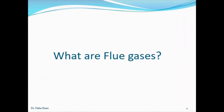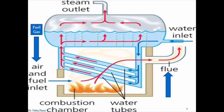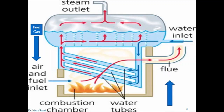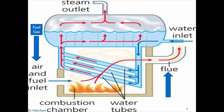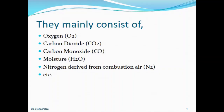So what are flue gases? Flue gases are the waste gases which come after combustion. The fuel gas is the gas which is used for combustion, and the flue gas is the waste gas which comes after combustion. It generally contains gases like oxygen, carbon dioxide, carbon monoxide, moisture, nitrogen, etc.